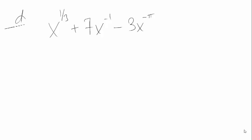If I want to differentiate this function, I do the same thing. So for x to the 1/3, I bring down the 1/3, and I subtract by 1. 1/3 minus 1 is minus 2/3. For this 7x to the minus 1, I bring down that minus 1, so my plus 7 becomes a minus 7, and now I subtract 1 from the power. Minus 1 minus 1 is minus 2.